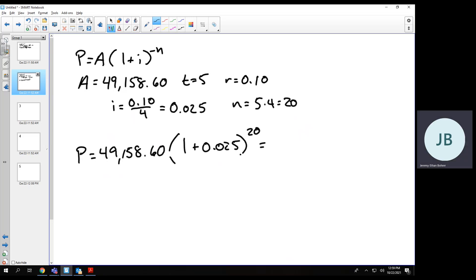Plugging this into our calculator, we have 30,007, so $30,000 and 7 cents that we need to deposit, approximately $30,000 in order to get that $49,158.60 at the end.